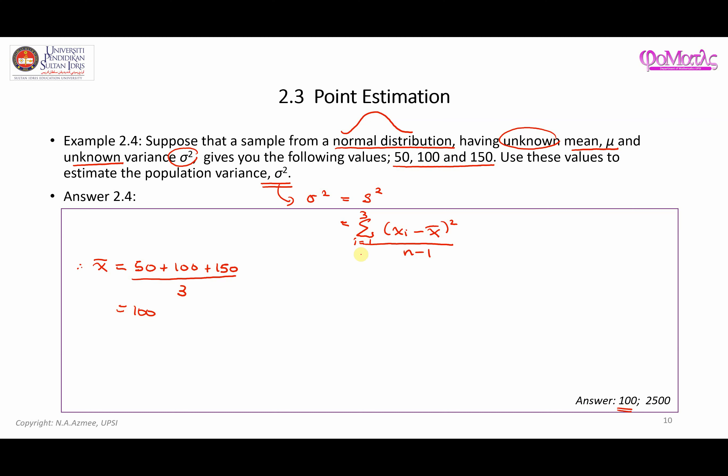Next, we're going to do the summation process. We have 50 minus 100 squared, plus 100 minus 100 squared, and then we're going to have 150 minus 100 squared over 3 minus 1, which is going to be over 2.